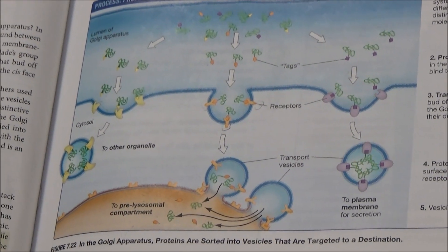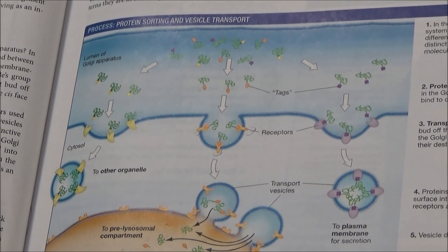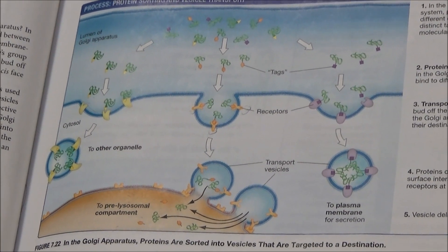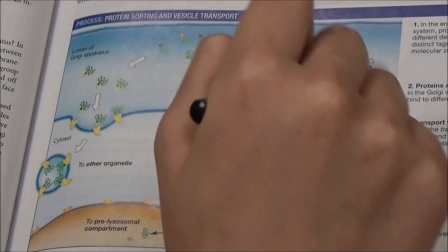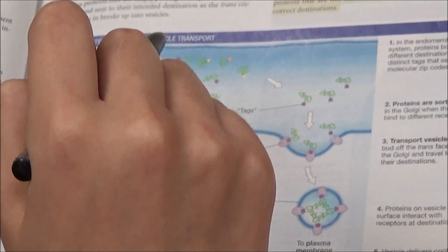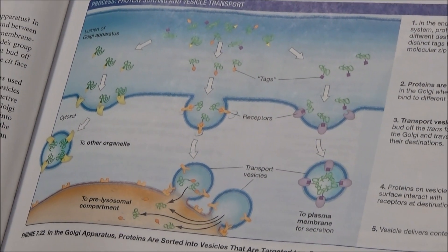Okay, so now we're going to be talking about how proteins exactly bud off from the Golgi and are taken to their specific locations. If we look at this picture, we can see that there are different types of proteins here with different types of signal sequences that were put on it by the Golgi body.